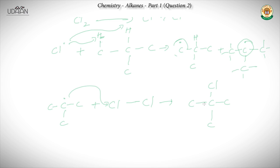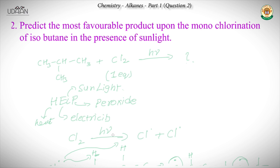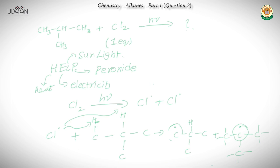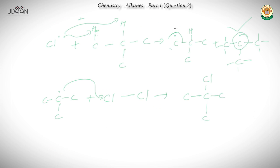Once the tertiary free radical is formed, it attacks a Cl₂ molecule and the final product is 2-chloro-2-methylpropane. So to recap: draw the structure of isobutane, create free radicals and determine which is more stable, then that free radical attacks a chlorine molecule to form the final monochlorinated product. This reaction is called free radical chlorination of alkanes and is a very important reaction to remember.